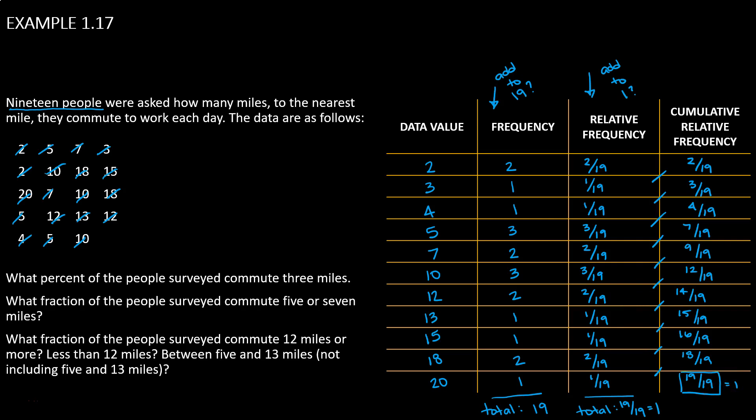Now we're ready to answer some questions. What percent of people surveyed commute 3 miles? We're looking for percent, which means we're looking at a relative frequency. Now it's only asking for those who commuted exactly 3 miles, so we just need to read the relative frequency for the data value 3. That's 1 over 19. Now that's not a percentage. We're going to convert that into a percent.